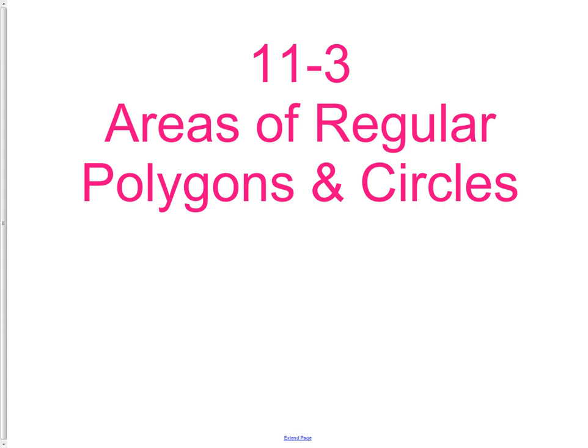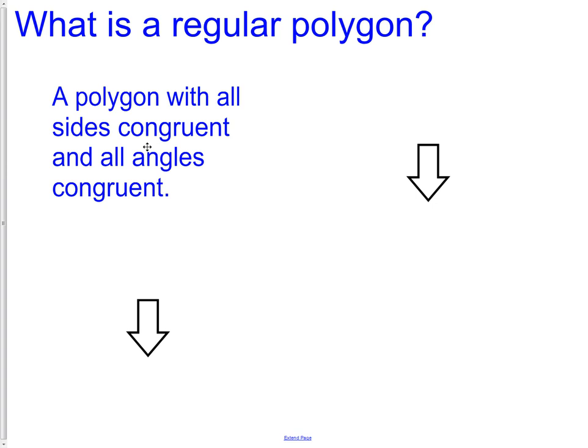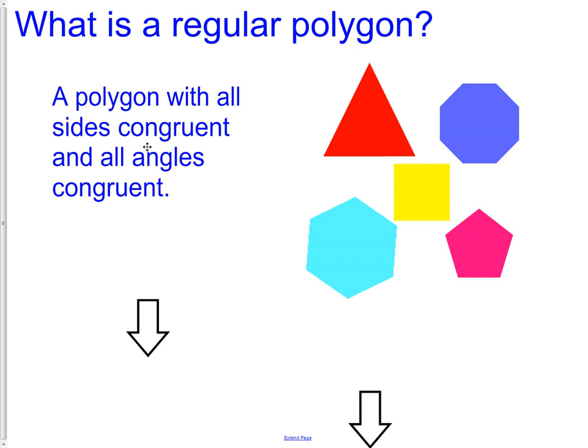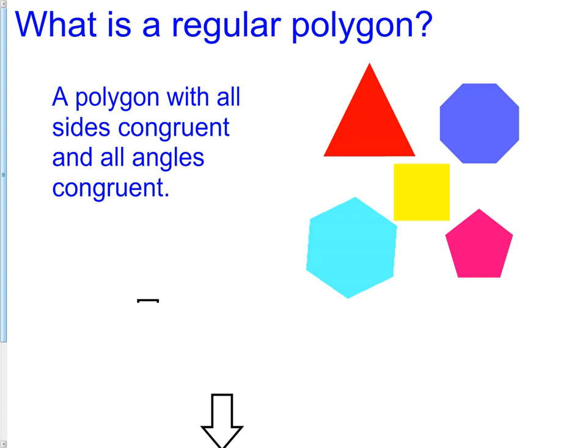Next we move on to areas of regular polygons and circles. Regular polygons have all sides and all angles congruent, and the shape is convex. So a polygon with all sides and all angles congruent makes a regular polygon. It is possible for any shape with any number of sides to be a regular polygon — a regular triangle (equilateral triangle), a regular octagon, a square, a regular hexagon, and a regular pentagon are all pictured here.